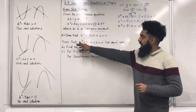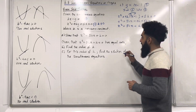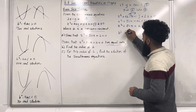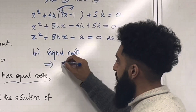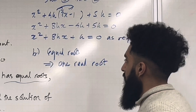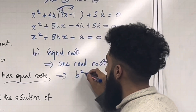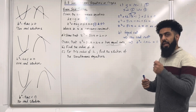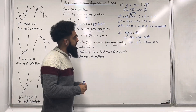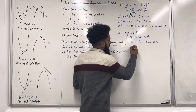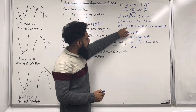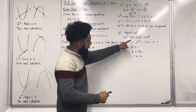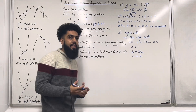Part B: given that x squared plus 8kx plus k equals 0 has equal roots, find the value of k. Equal roots implies there is only one real root, therefore the discriminant b squared minus 4ac equals 0. We identify our a, b, and c from the quadratic equation: a is the coefficient of x squared, so a equals 1; b is the coefficient of x, which is 8k; and c is the constant term, which is k. We substitute a, b, and c into b squared minus 4ac equals 0.